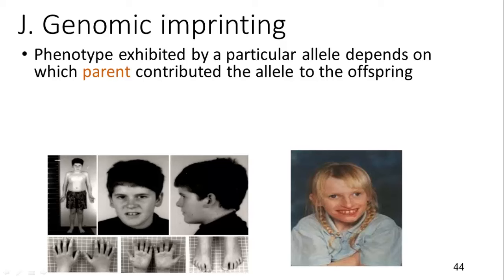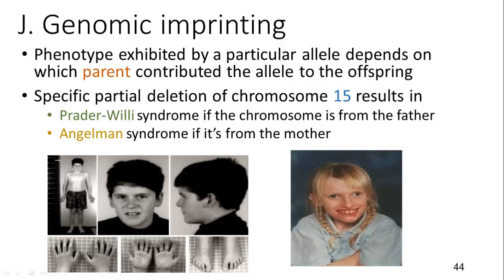Genomic imprinting is where the phenotype exhibited by a particular allele depends on which parent contributed the allele to the offspring. The imprinting is determined by whether it came from the mother or the father. A deletion in chromosome 15, if it comes from the father, will result in Prader-Willi syndrome. If it comes from the mother, it is called Angelman syndrome. There are some slight genetic differences between these.